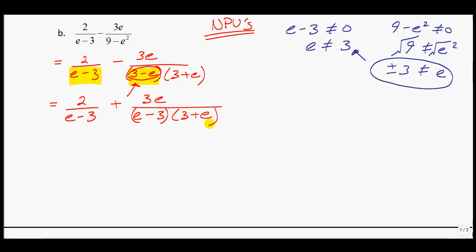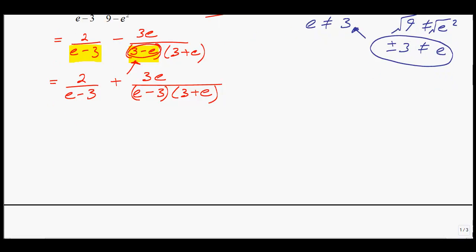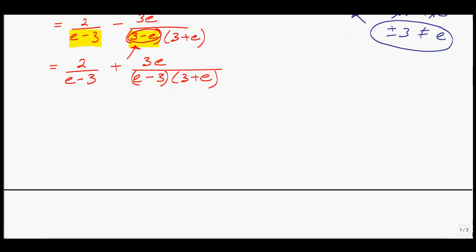So now that we've achieved some part of this denominator that's the same, now we can combine them. What will your common denominator be? We have an e minus 3 on one side and a 3 plus e on the other side. So my first term, the 2, is missing a 3 plus e, so you have to multiply the 2 by 3 plus e.